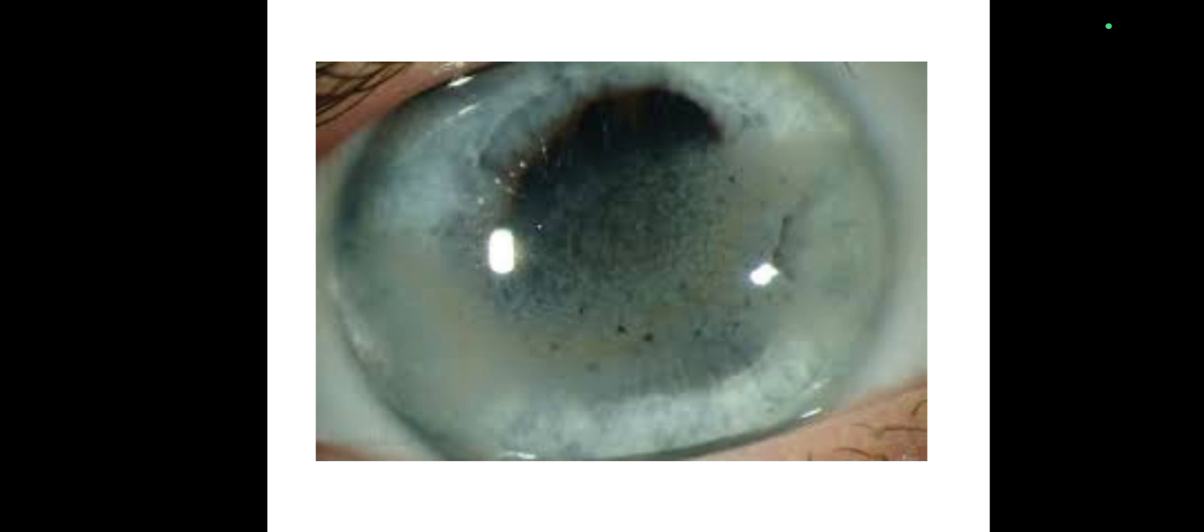After your examination with slit lamp, the viva question from the examiner will be: what is your diagnosis? The answer is calcific band keratopathy. What is the differential diagnosis? The differential diagnosis will be corneal scar, corneal abscess, spheroidal corneal degeneration, bacterial keratitis, and fungal keratitis.